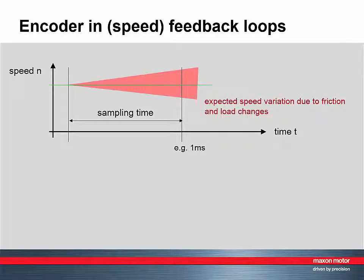Friction and load changes can lead to a deviation from the actual speed level. A high mass inertia, on the other hand, dampens this effect.